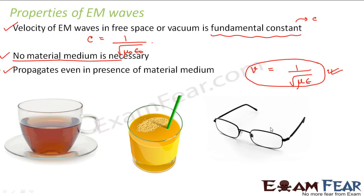This shows that electromagnetic waves can propagate even in the presence of a material medium. Consider a cup of tea or a glass with juice — when light falls on them, it is able to pass through. Electromagnetic waves can pass through a medium and also through vacuum. In vacuum the speed of electromagnetic waves equals the speed of light, and in the presence of a material medium it is given by 1/√(με).